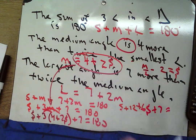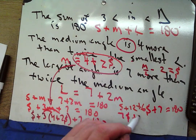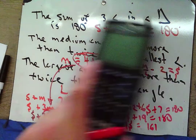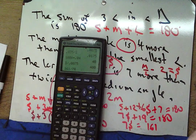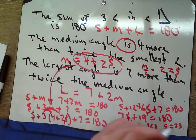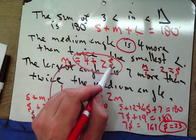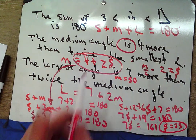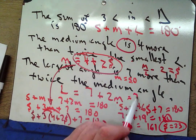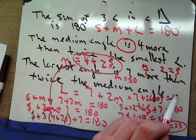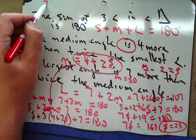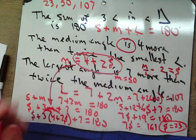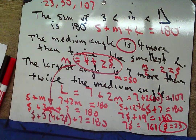Substituting m = 2s + 4 into s + 3m = 173: s + 3(2s + 4) + 7 = 180... distributing: s + 6s + 12 + 7 = 180, so 7s + 19 = 180... wait, 7s + 18 = 180, giving 7s = 161... wait let me check — actually 7s = 162... no: s = 23. Then m = 2(23) + 4 = 50, and l = 2(50) + 7 = 107. Check: 23 + 50 + 107 = 180. ✓